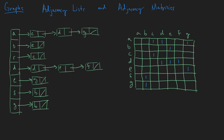Let me just pick a different color and we're going to put in zeros for the rest of this, just to be a little bit more complete. That's a lot of zeros, I know, just hang with me for a second. And there we go — that's what our adjacency matrix looks like for this graph.